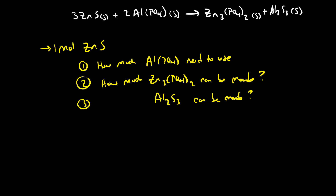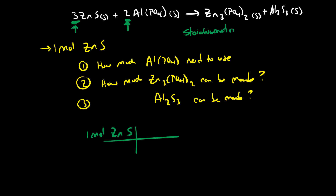The key to this is recognizing that the coefficients we've put here — when we balanced the reaction — tell us that when three zinc sulfide molecules react, two molecules of aluminum phosphate react. That is our important conversion when thinking about chemical reactions. We call these stoichiometric coefficients, and we can use them as a conversion factor.